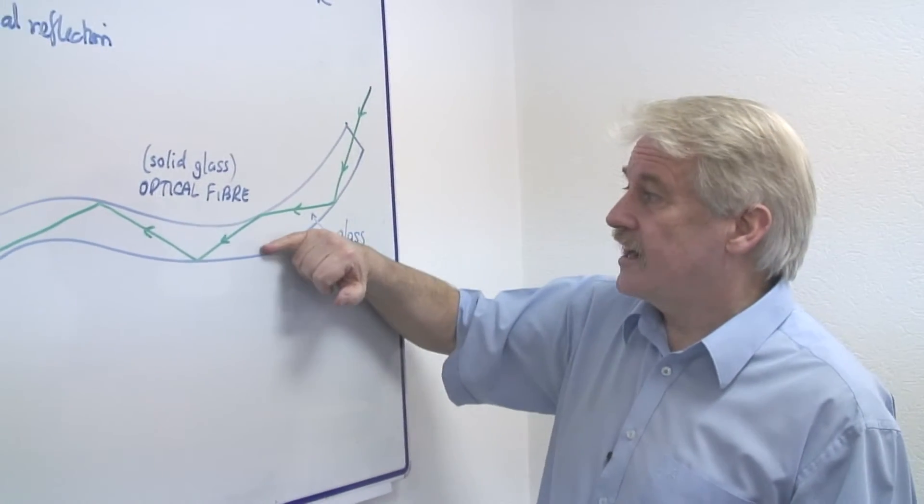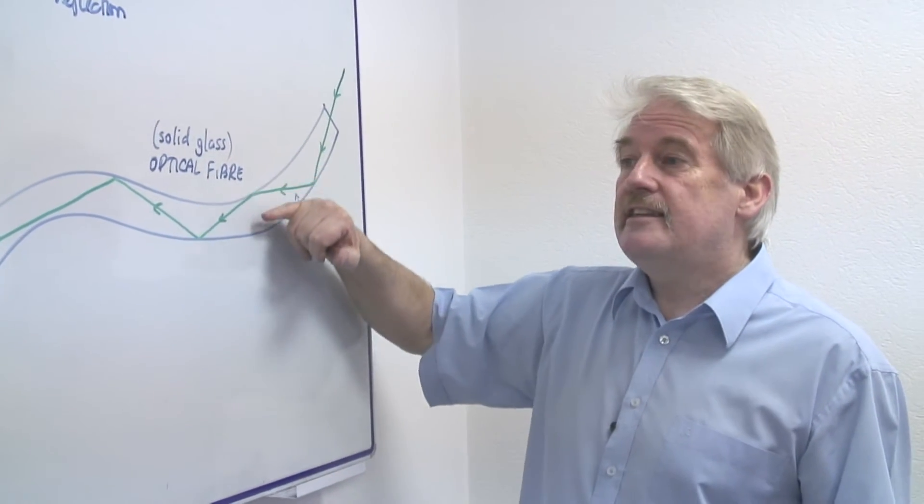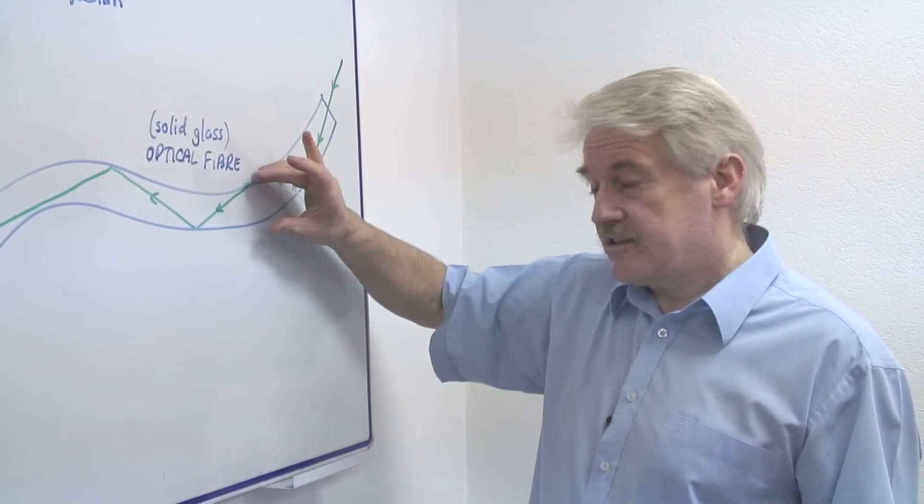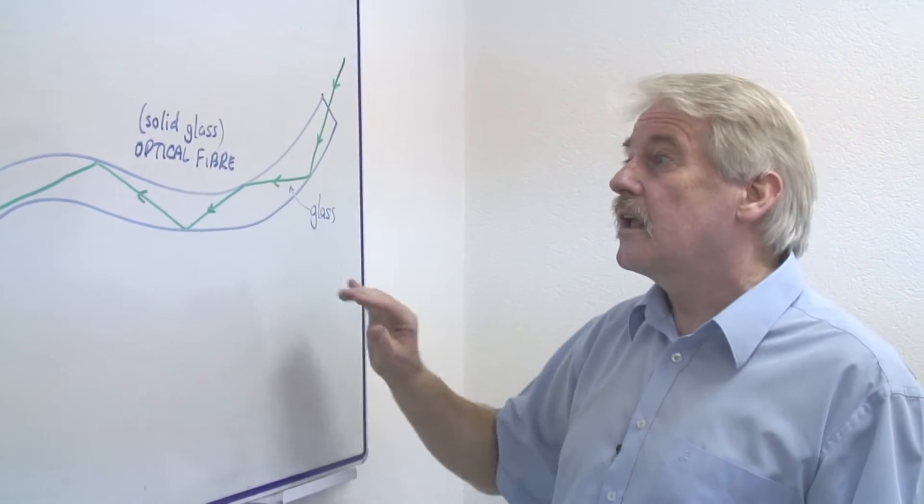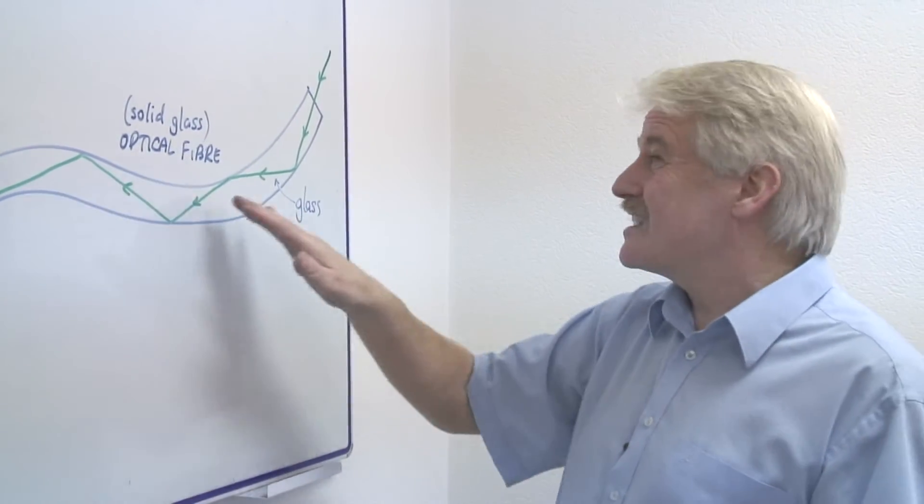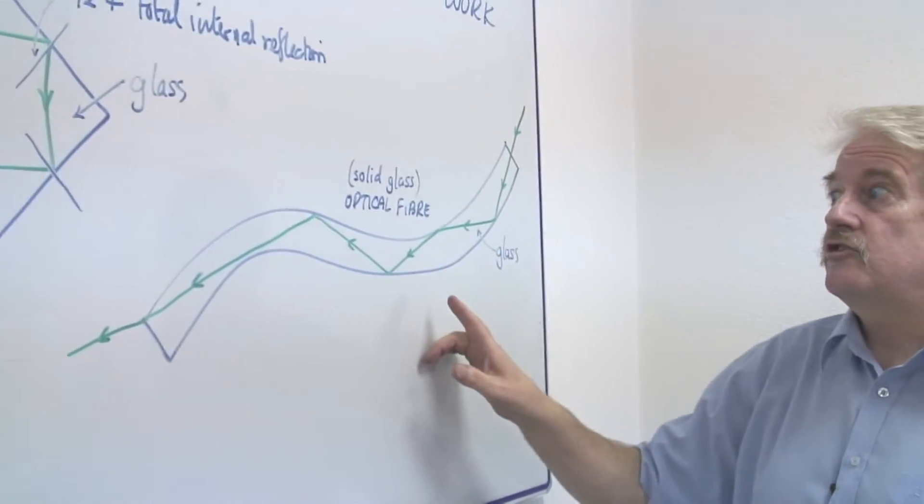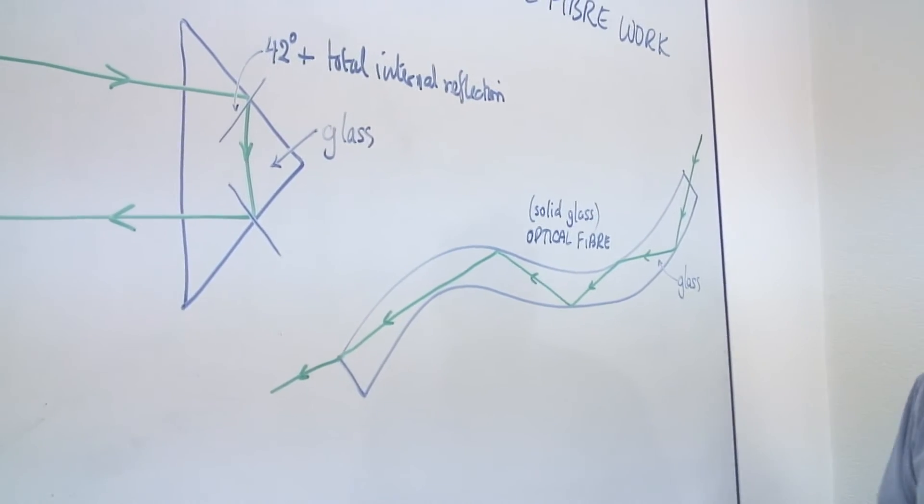Very often the glass is different in density at the outside from the inside. The glass, nature of the glass changes slightly. And that means that this process isn't quite like total internal reflection. But it works in the same way.